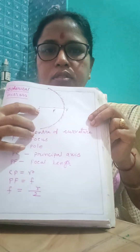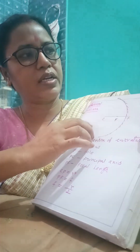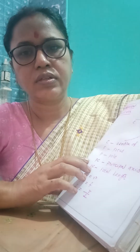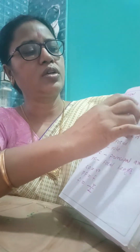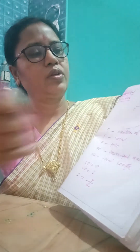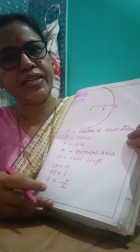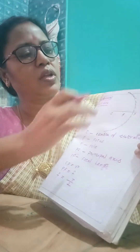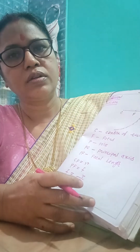The radius of the sphere is known as the radius of curvature. The sphere has a radius, and you can draw an infinite number of radii from the center. The mirror also has a midpoint, and that midpoint is known as the pole of the mirror.